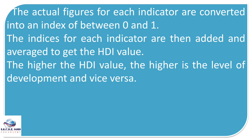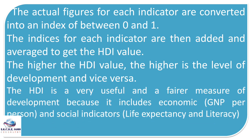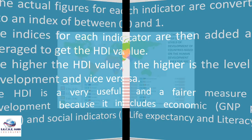A country with the lowest HDI figure is considered the least developed. HDI is a very useful and fair measure of development because it includes an economic indicator — GNP per person — and social indicators — life expectancy and literacy. This means that when a country is ranked most developed under HDI, it is better than the rest in all three aspects. Unlike previous measures where a country may have high GNP per capita but low life expectancy, HDI is much better.